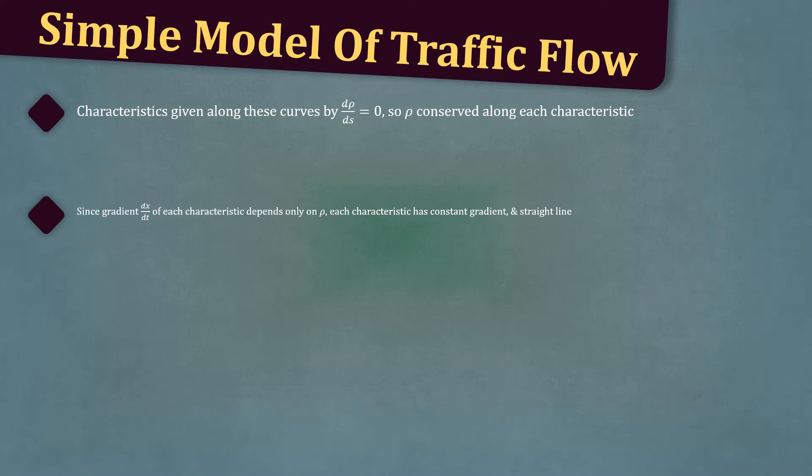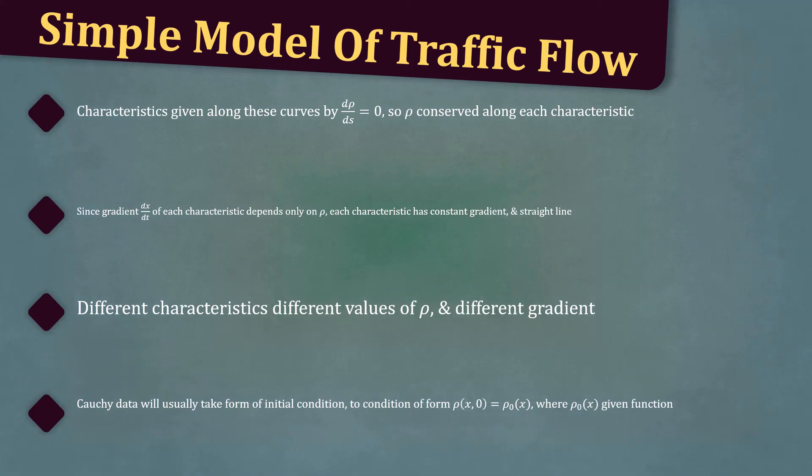Since the gradient dx/dt of each characteristic depends only on ρ, each characteristic has a constant gradient and hence is a straight line. Note though that different characteristics can have different values of ρ and hence different gradients.